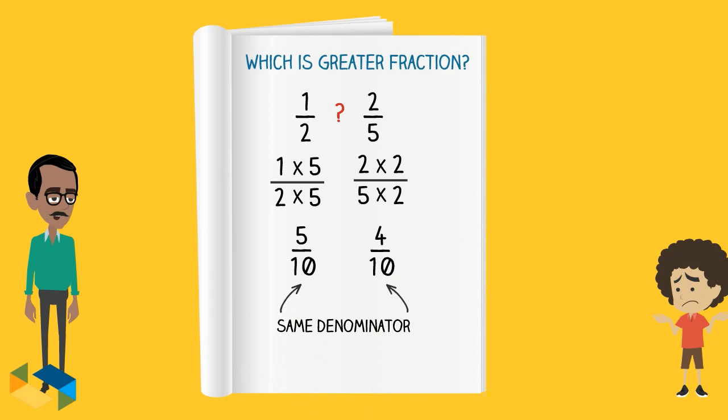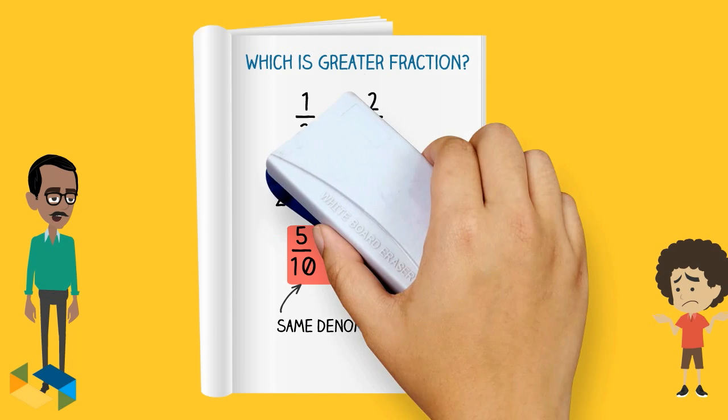Now, you see, the denominator is the same. To just compare the numerators, the fraction with the bigger numerator is bigger than the other fraction.